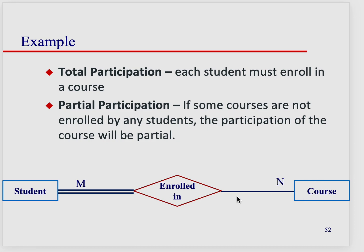But the reverse, because it's a partial and a single line, partial participation and single line, it would read: courses are enrolled in zero — like a course can have enrolled zero or more students. So basically, if there's a chance that courses may not be so popular and nobody takes them, if there's a chance that you can have a course that no one enrolls in, you keep it partial because there's a zero.